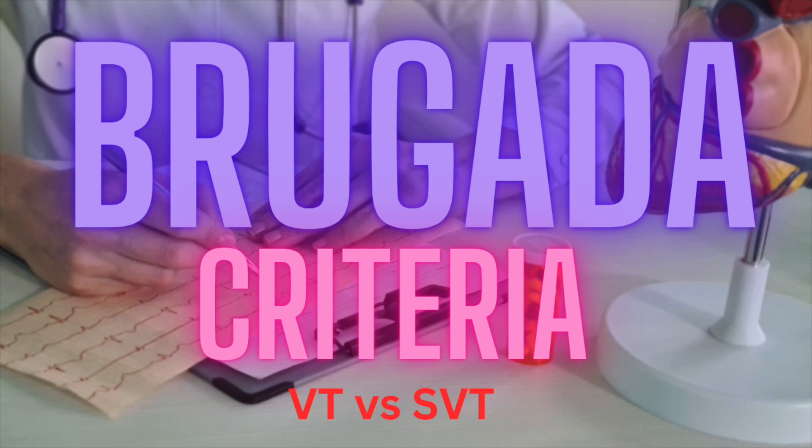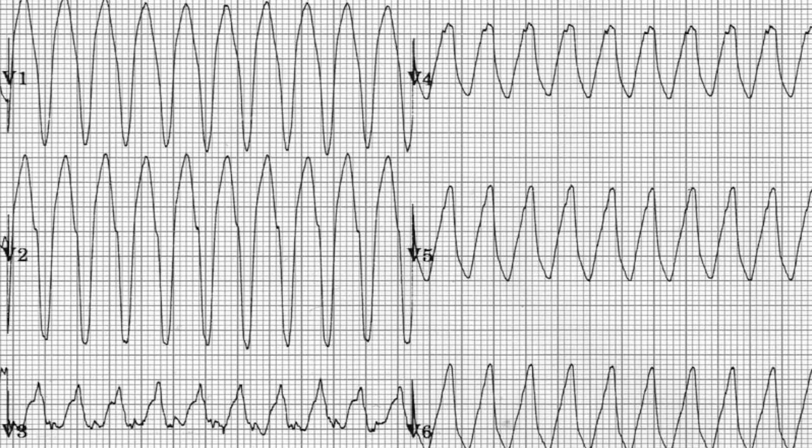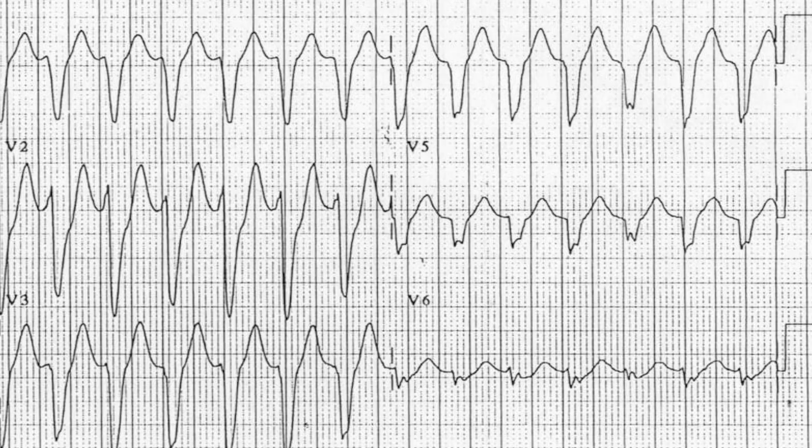The first thing we look at is concordance. Basically, are the heart's electrical impulses — which the EKG picks up — all going the same way in those chest leads, V1 through V6? If those lines on the EKG are all moving in the same direction in those leads, that's a VT clue.